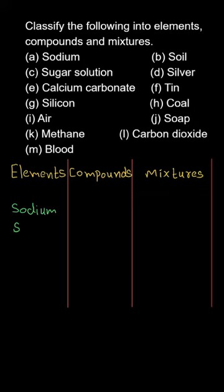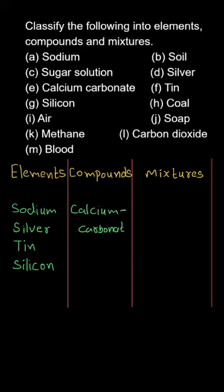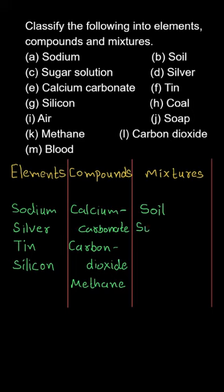So from the list which have been provided to us, your elements would have sodium, silver, tin and silicon. For the compounds it will be having calcium carbonate, carbon dioxide and methane. For the mixtures we'll have soil, sugar solution, coal, air, blood and soap.